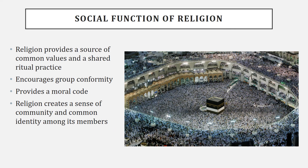In the social function of religion, religion provides common values, common morals, and shared ritual practices. As seen in this picture, the Hajj is a pilgrimage Muslims perform — if financially and physically able — to the city of Mecca in Saudi Arabia. It takes place in the last month of the Islamic year, from the seventh to the twelfth day. The central black block is the Kaaba, which pilgrims circle seven times. Approximately two million people visit during the Hajj, creating a huge sense of community, shared identity, and ritual practice — similar to how Christians might attend church on Sunday or read the Bible.